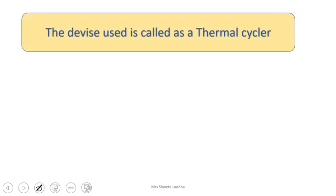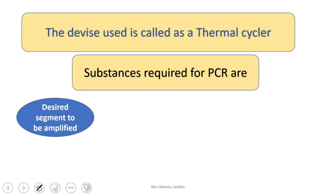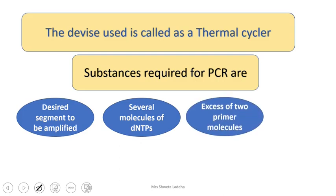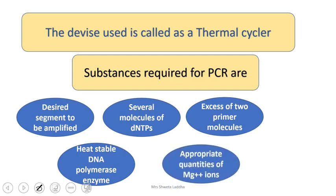This device is called a thermal cycler. The different substances required to carry out PCR are: the desired DNA segment to be amplified, molecules of deoxyribonucleotide triphosphates, two primer molecules, heat-stable DNA polymerase enzyme called Taq polymerase obtained from Thermus aquaticus bacteria, and appropriate quantities of magnesium ions.